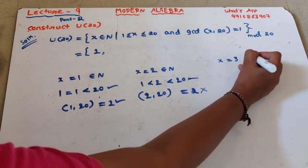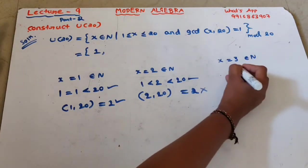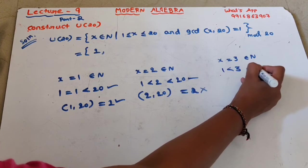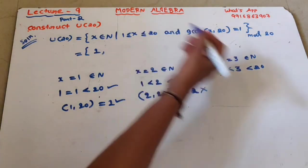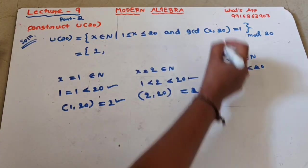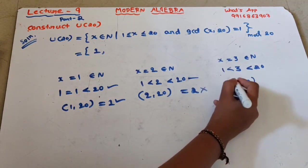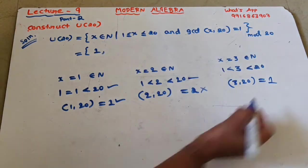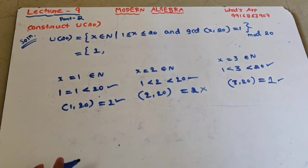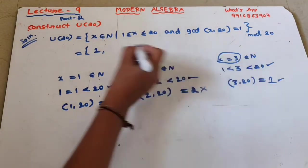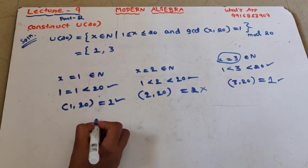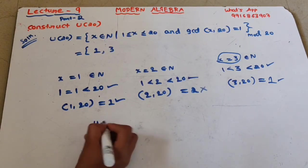Next take x = 3. Of course 3 belongs to the natural numbers, and 3 lies between 1 and 20, so the first condition is satisfied. gcd(3, 20) = 1, so both conditions are satisfied and 3 belongs to U(20).